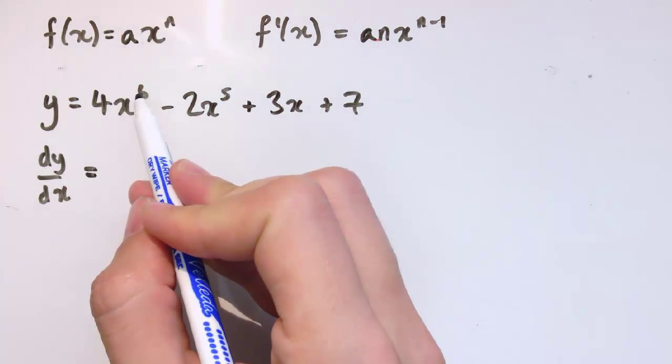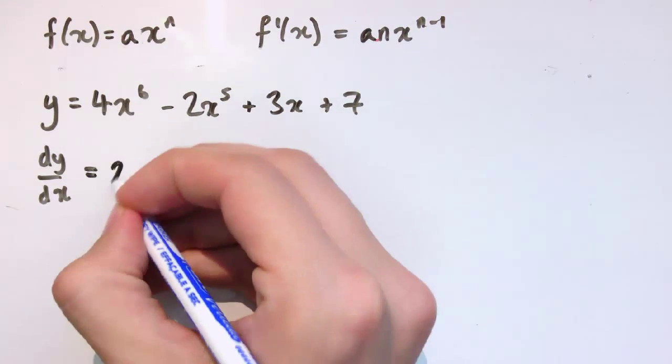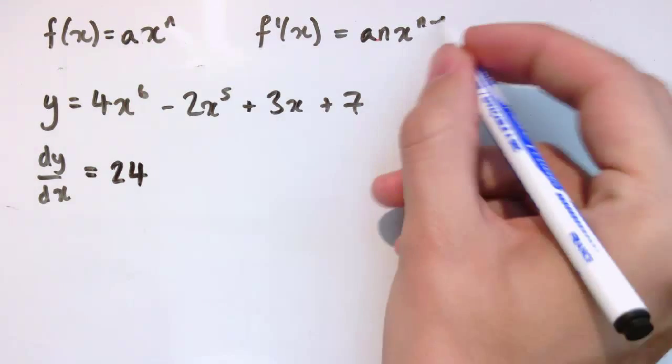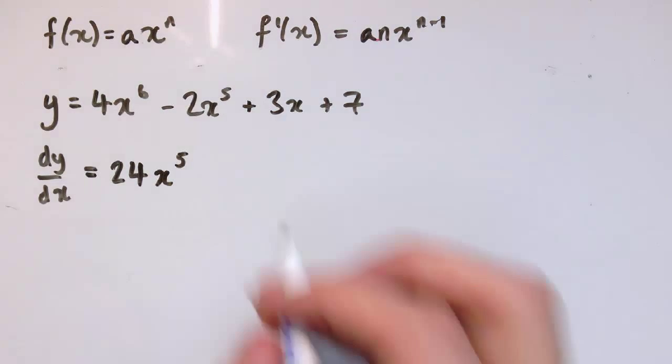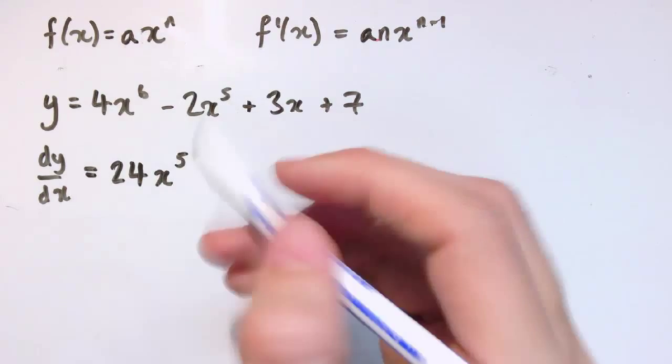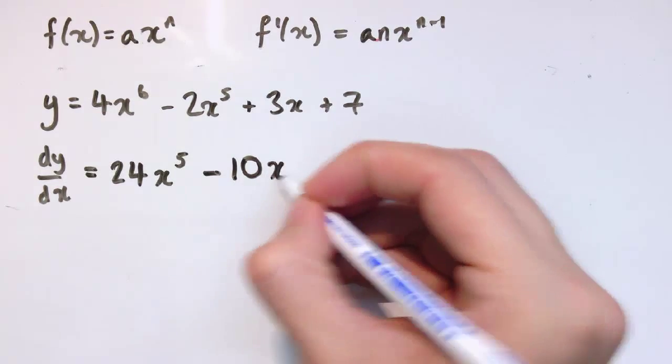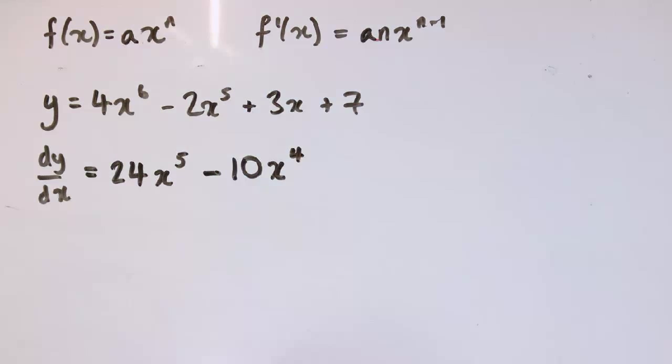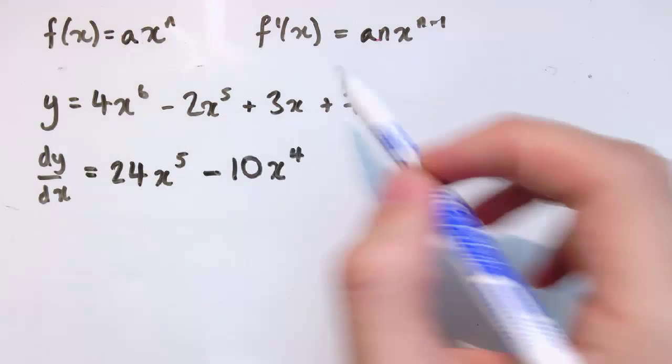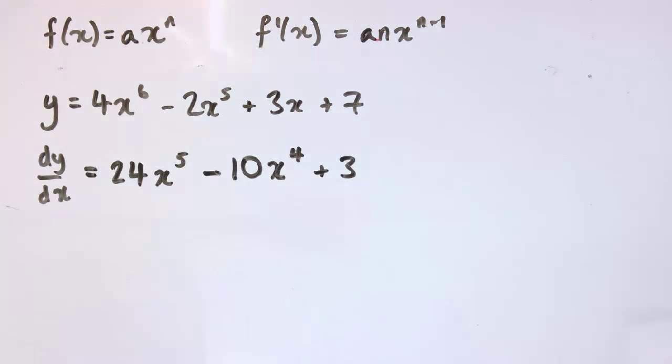So, 4x to the 6, I get 6 times 4, which is 24, and then I reduce the power by 1, so we get x to the 5. Now, I do the same thing here. I've got minus 2x to the 5, so my n is 5, so I get minus 2 times 5, which is minus 10, x to the n minus 1, which is 4. And these two terms here, 3x and 7, as we just said, you can apply the rules, but usually we just remember that 3x differentiates just to 3, the linear term and the 7 is 0. So, there's my gradient formula.